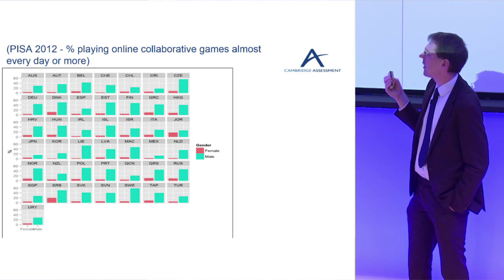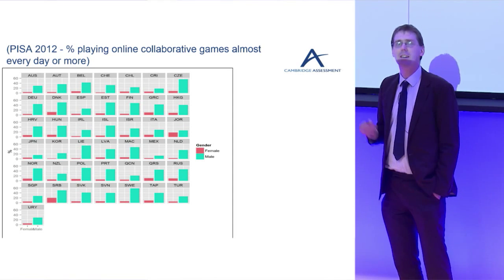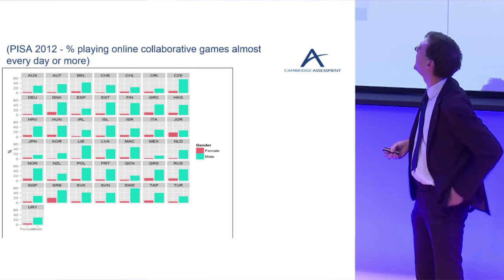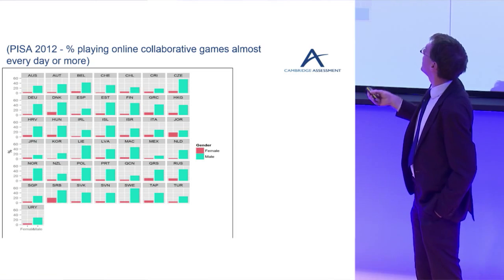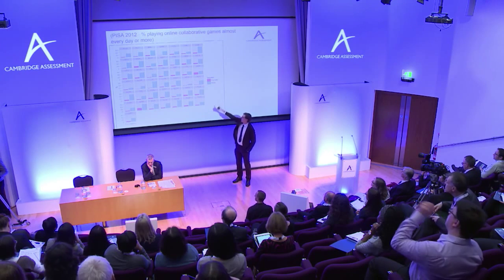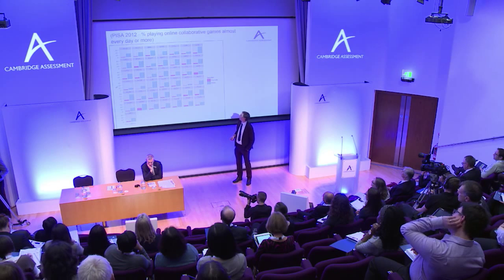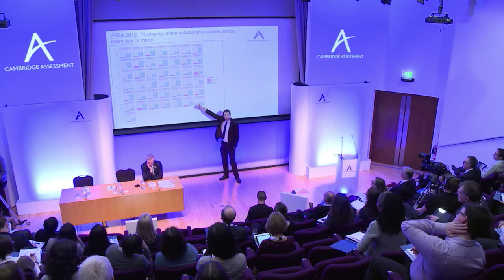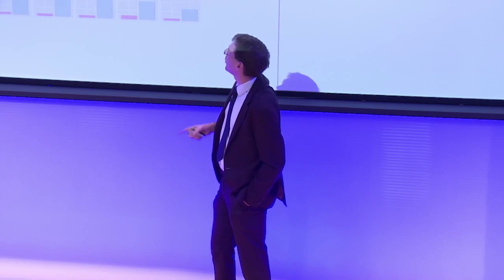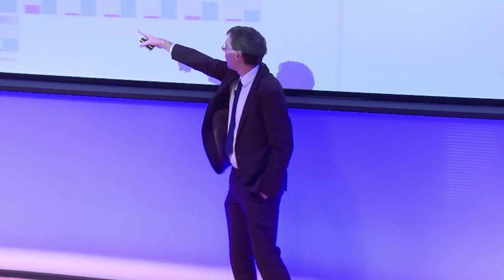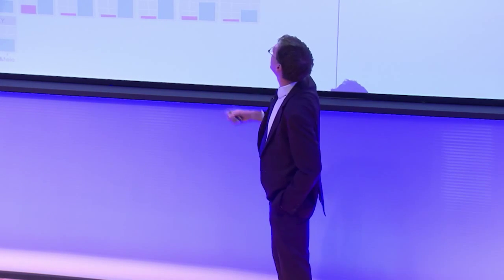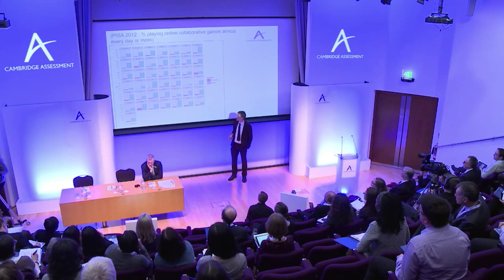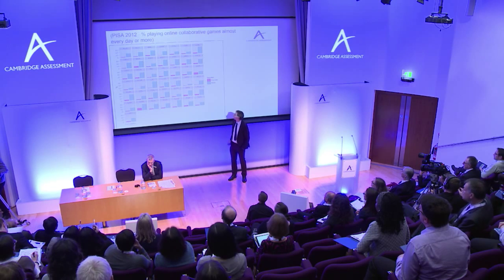This one is about the biggest gender gap you can find anywhere in any of the PISA questions. It's about how much do you play online collaborative games — so you're on your computer playing with other people across the internet. Each square on these charts is a country. QCN is Shanghai, China; SGP is Singapore. Britain is GBR, though they're not on this chart because we didn't do this part of the survey.